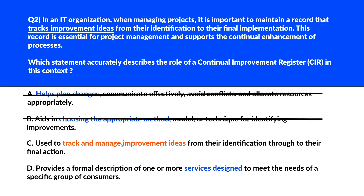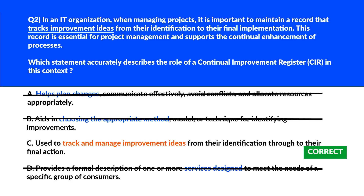The CIR is used to track and manage improvement ideas throughout their lifecycle from identification to final action. Option D provides a formal description of one or more services designed to meet the needs of a specific group of consumers — this describes service management tools, not a tool for tracking improvements. We'll lock option C as the right answer.